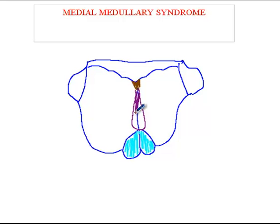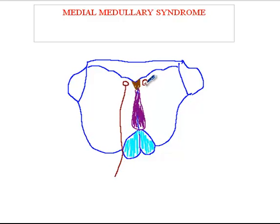So we're talking about the medial medullary syndrome and I'm drawing structures on the medial side. You have the hypoglossal nuclei over here, and the hypoglossal nerve goes from here and passes out next to the pyramids. So to review the anatomy: these are the corticospinal tracts, you have the medial lemniscus here, this is the medial longitudinal fasciculus, these are the hypoglossal nuclei, and these are the hypoglossal nerves.